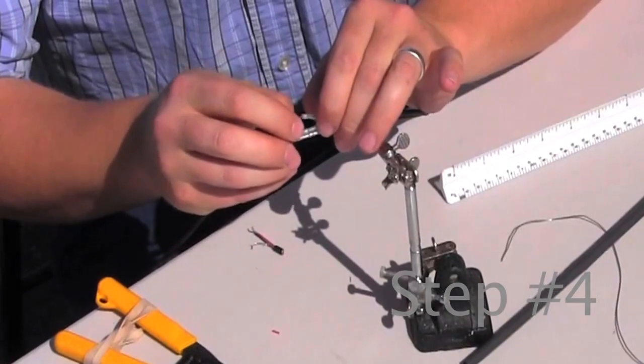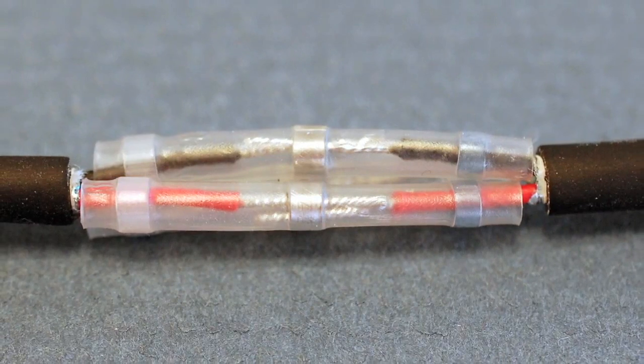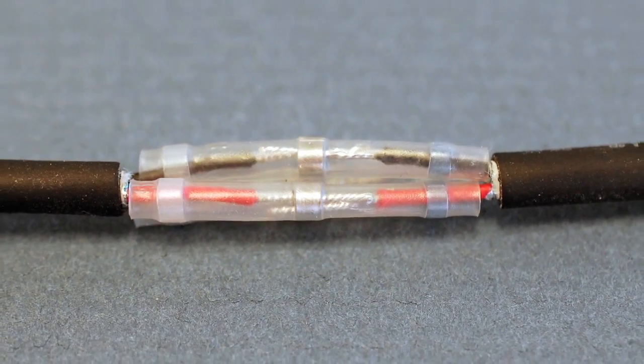Step 4: slide the cable that is to be spliced into the other end of the solder sleeve, making sure the tinned ends are inside the solder rings. Verify that the wires match up, for example red to red, black to black, and so on.